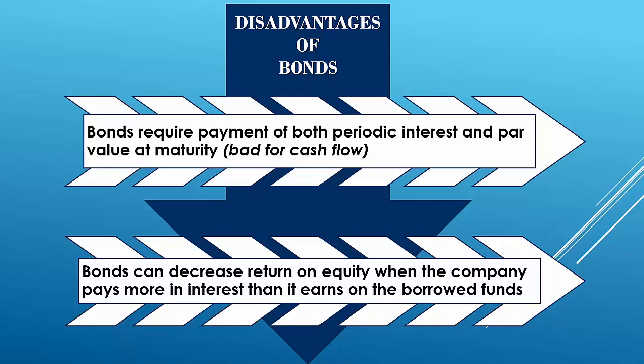A disadvantage of bonds is that the company is required to pay interest. If a company issues stock, they're not obligated to pay anything — dividends aren't guaranteed, and the stock's future value is uncertain, meaning higher risk but potentially higher reward for investors. That's why some companies favor stock over bonds. The key disadvantage of bonds is the mandatory interest payments, which can strain cash flow.